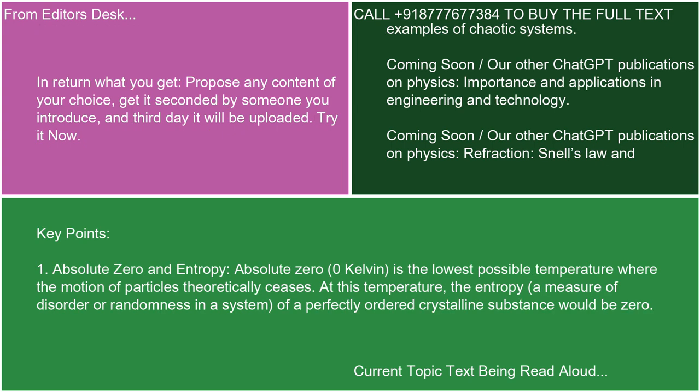Key points. 1. Absolute zero and entropy. Absolute zero, zero Kelvin, is the lowest possible temperature where the motion of particles theoretically ceases. At this temperature, the entropy — a measure of disorder or randomness in a system — of a perfectly ordered crystalline substance would be zero.